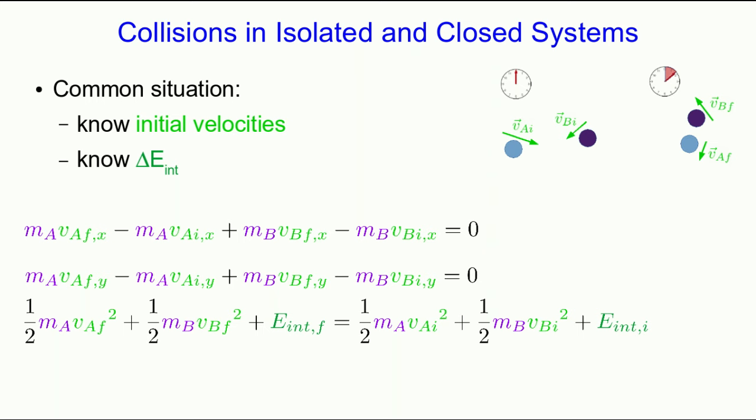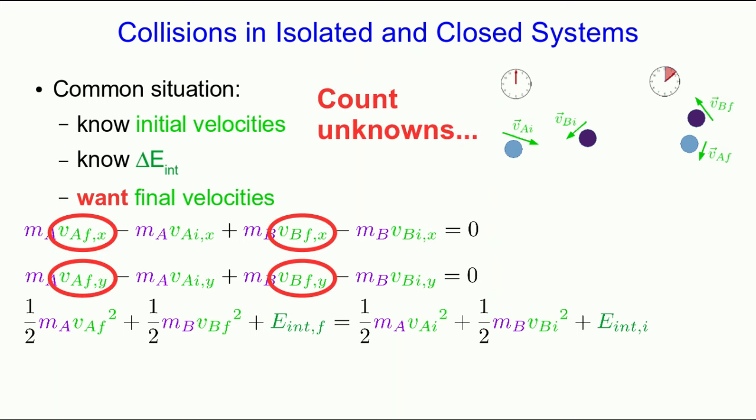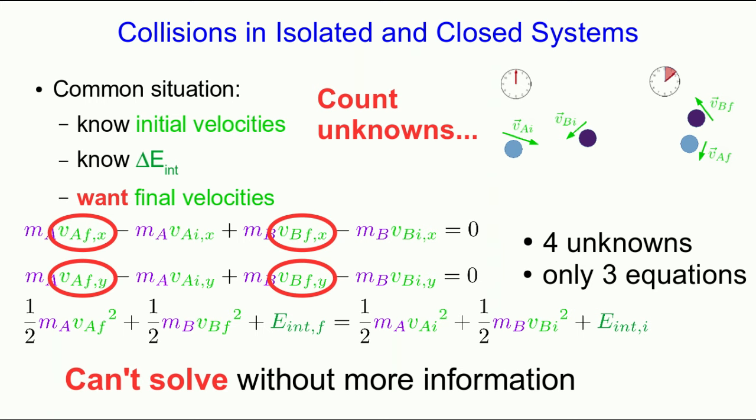Well, now think about the common sort of situation where we know the initial velocities and perhaps the change in internal energy. And we might want the final velocities. But count the unknowns. If we don't know the final velocities, that's actually four numbers that we don't know. Because it's two components for each of those two velocities. And so we have four unknowns, but only three equations. And so in two dimensions, we can't solve this unless we have some more information. Something like the final speed of one of the particles or the angle that it's going at after the collision or something like that.